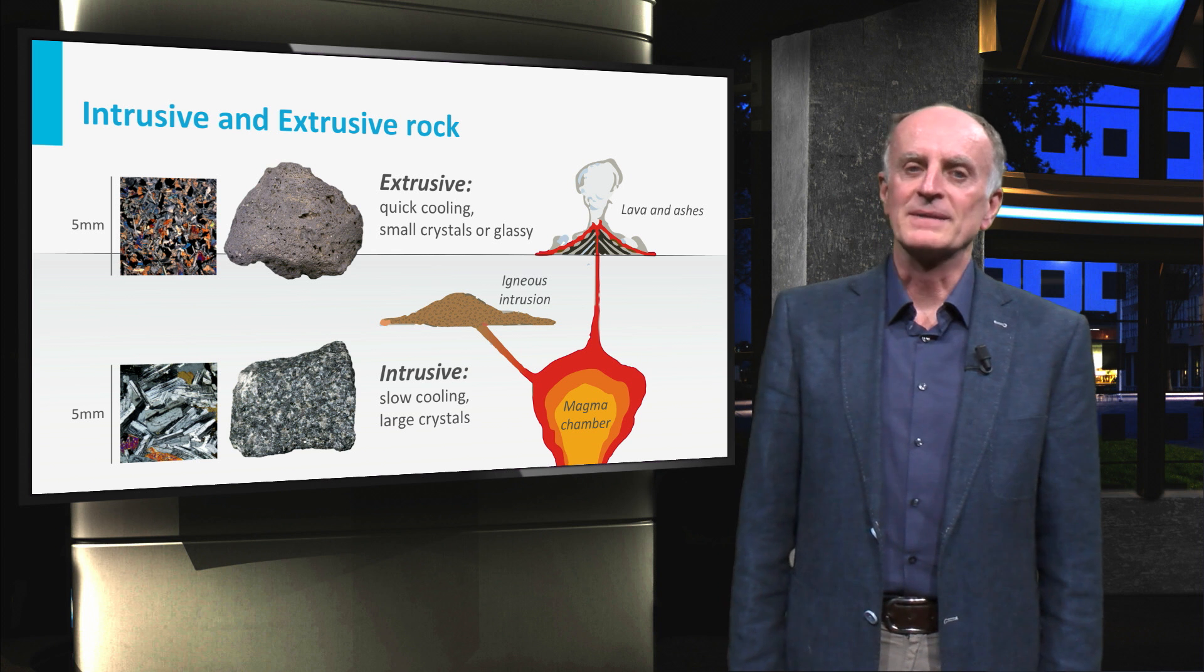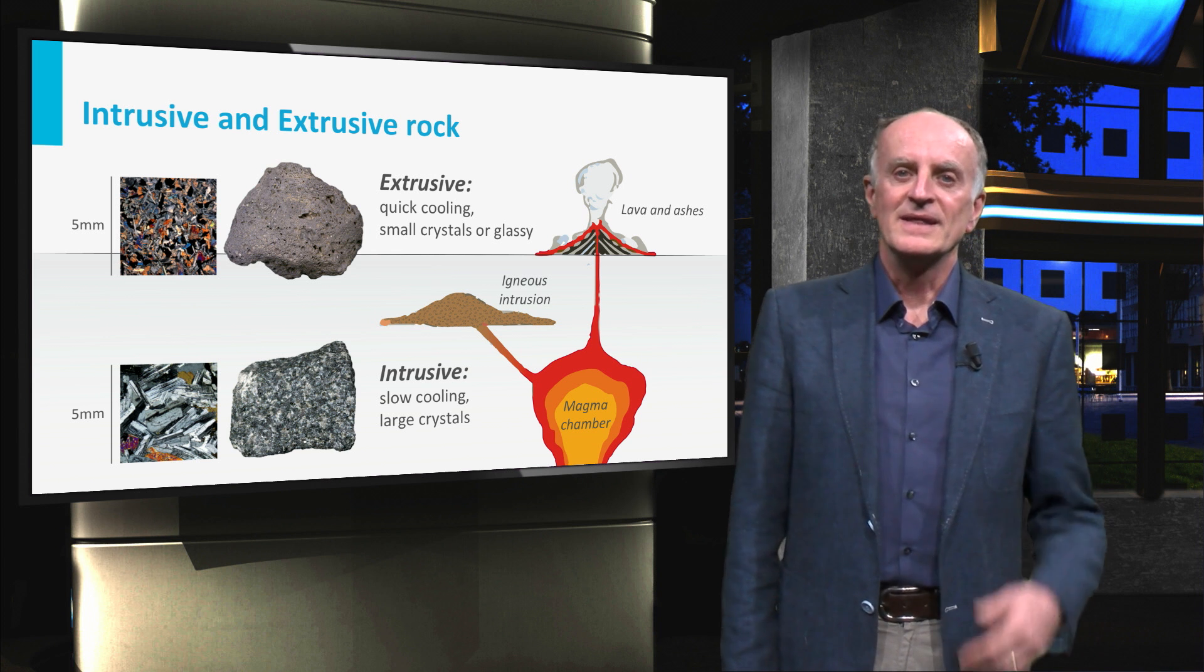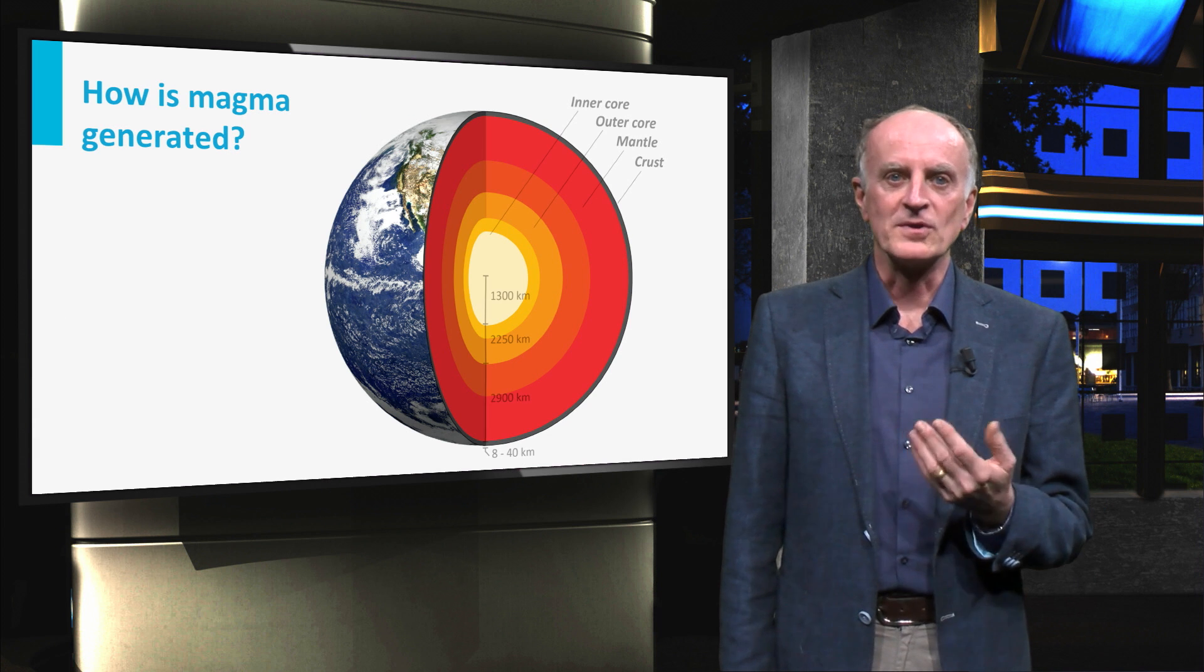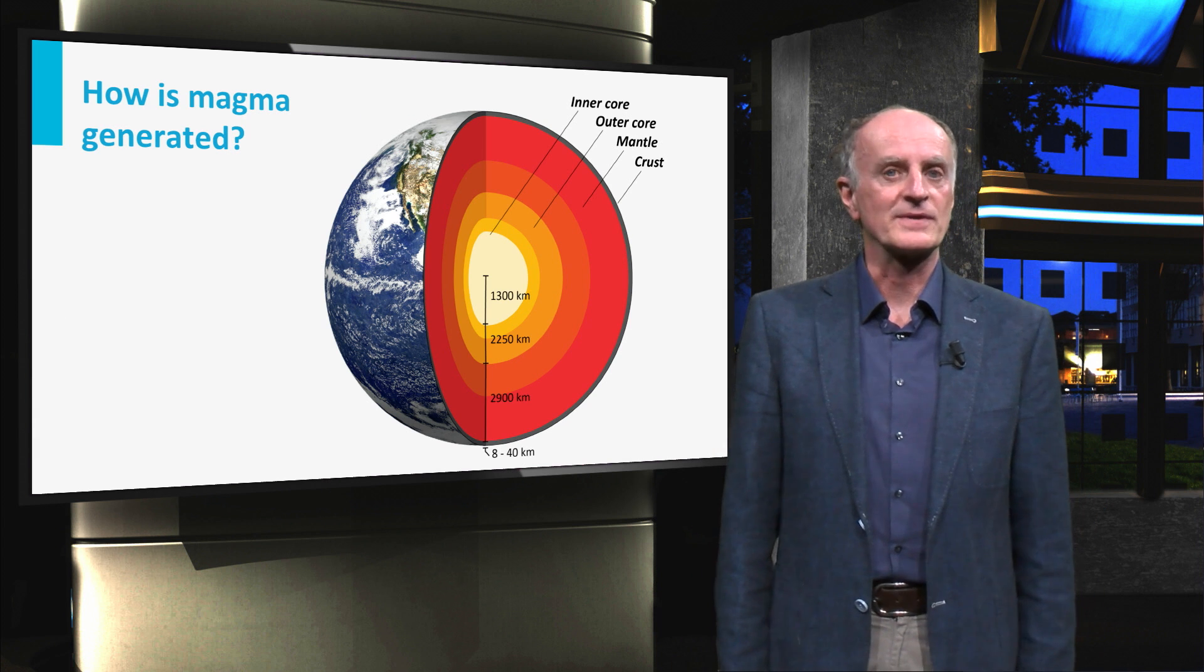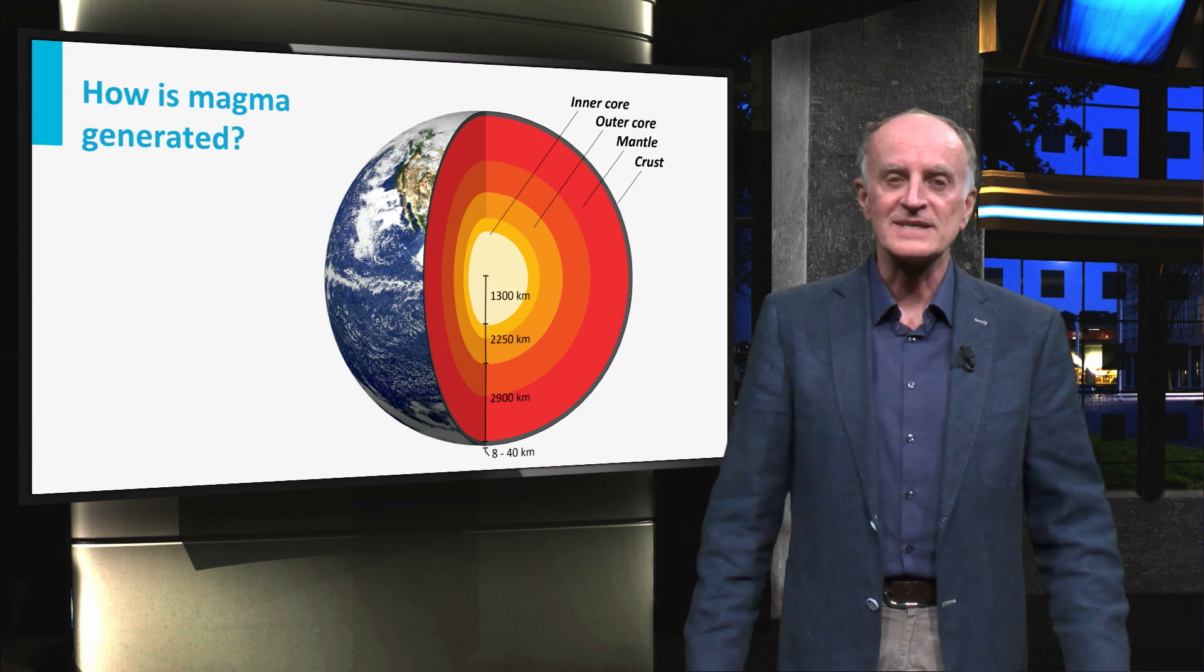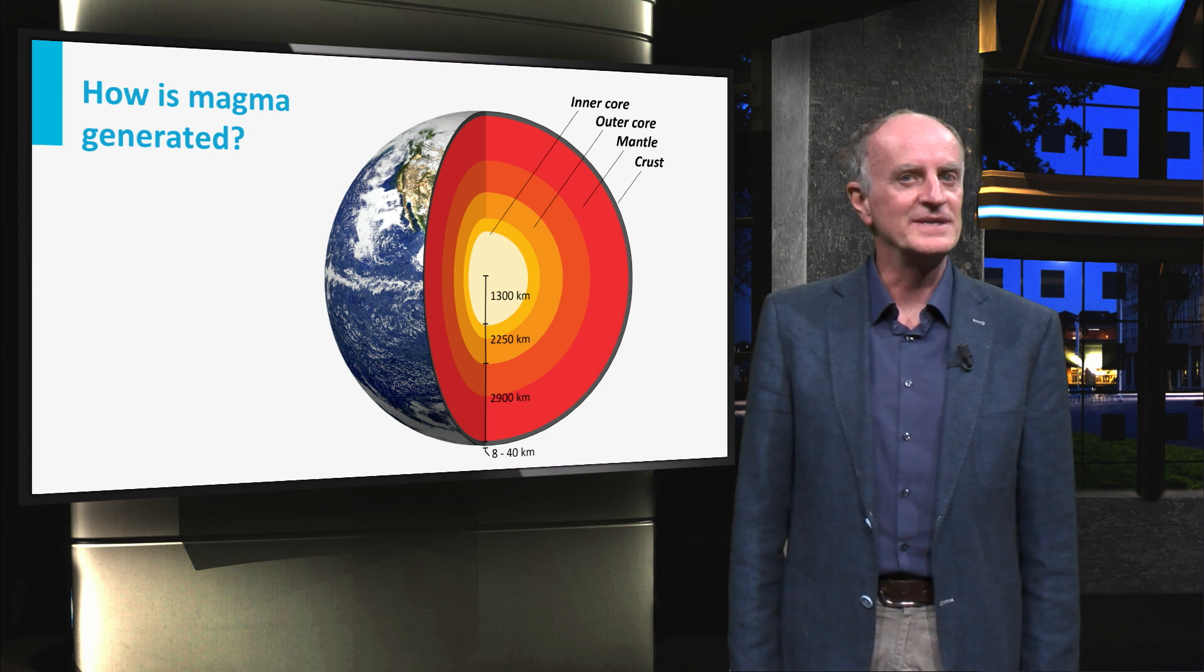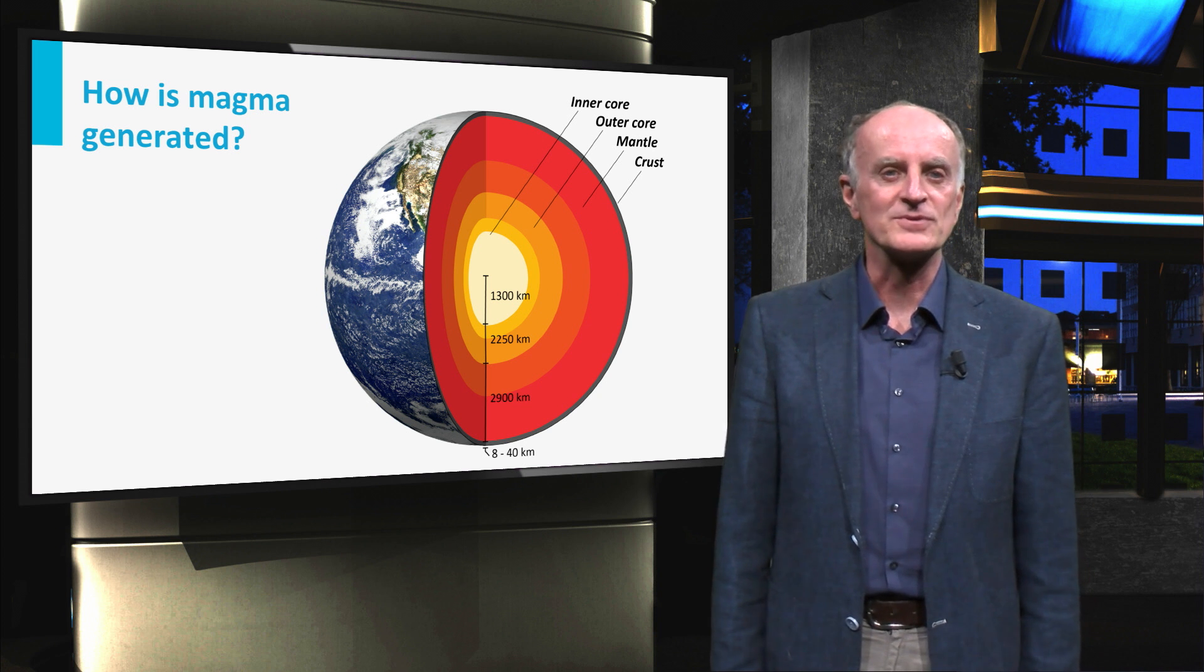Where does the magma come from? The answer to this question is not obvious as practically all rocks of the outer 3000 kilometers of the Earth are solid. Where does then the magma come from? How is this generated? We will need a bit of physics and chemistry for this part of the journey.